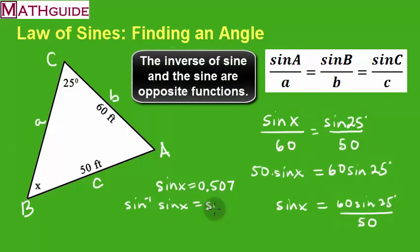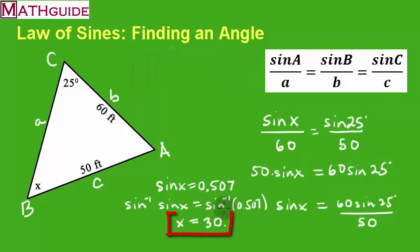So I'm going to take this 60 sine of 25, and I'm going to divide it by 50. Alright, so I'm going to plug this into a calculator and see what I get. I get sine of X is 0.507. Now it turns out that if I want to get X, I have to take the inverse sine to cancel the sine. So I'm going to do the inverse sine of both sides. And the reason why I'm doing that is because inverse sine and sine, they cancel each other, and that's just going to give us the value for X.